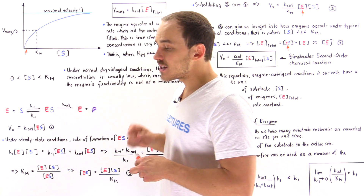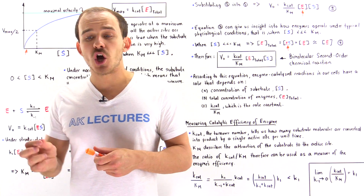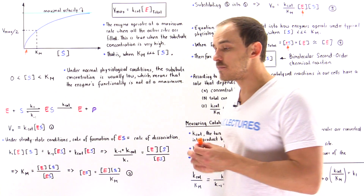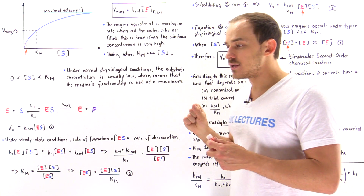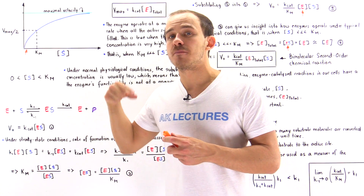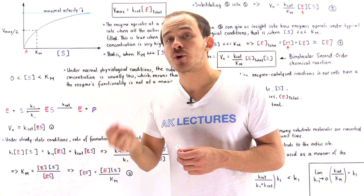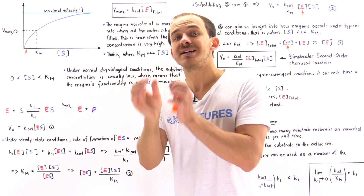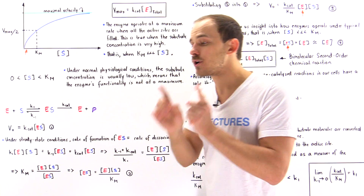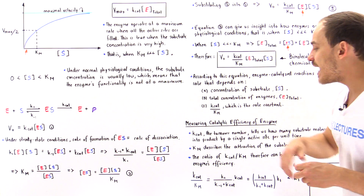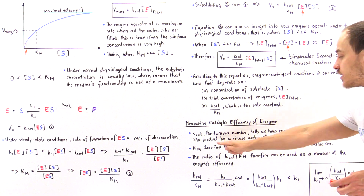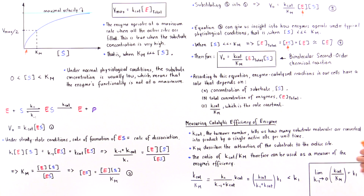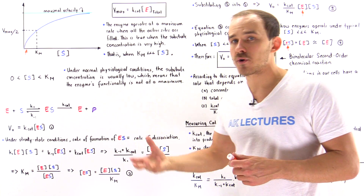Kcat, as discussed in the previous lecture, is known as the turnover number. It describes how many substrate molecules are transformed into product molecules per unit time per single active site, or per single enzyme — usually per second.